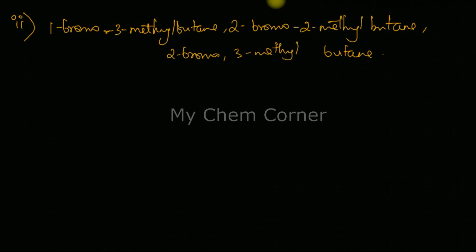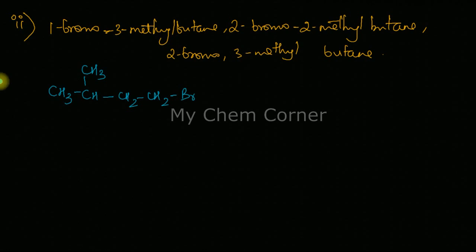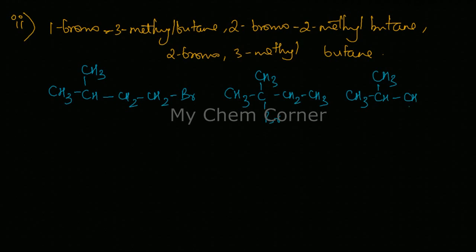For the second set, we again draw the structures. For 1-bromo-3-methylbutane: considering the third carbon has a methyl group, with CH2-CH2 leading to Br on position one. For 2-bromo-2-methylbutane: CH3-C(CH3)(Br)-CH2-CH3. For 2-bromo-3-methylbutane: Br on the second carbon and a methyl group on the third carbon.